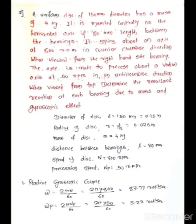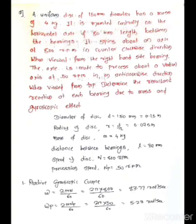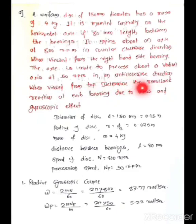Let's discuss the problem first. A uniform disc of 150 mm diameter has a mass of 4 kg. It is mounted centrally on a horizontal axle of 80 mm length between the bearings. It spins about the axle at 800 rpm in the counterclockwise direction when viewed from the right hand side bearing. The axle is made to precess about a vertical axis at 50 rpm in an anticlockwise direction when viewed from the top. Determine the resultant reaction at each bearing due to mass and gyroscopic effect.